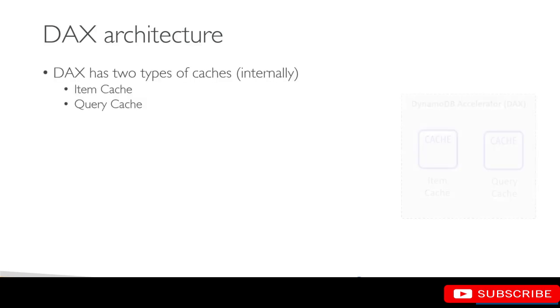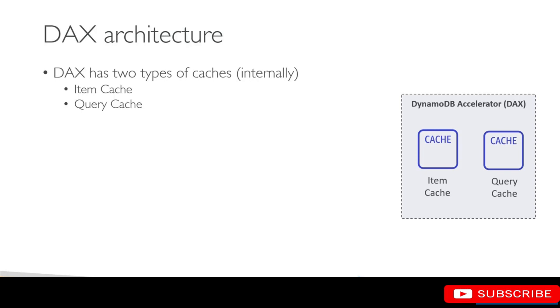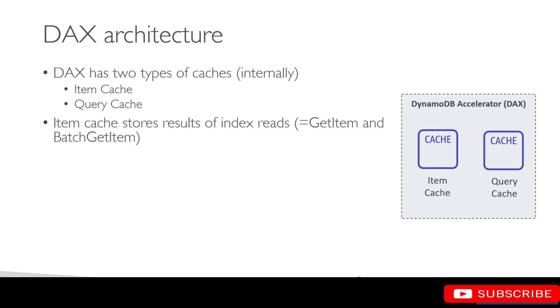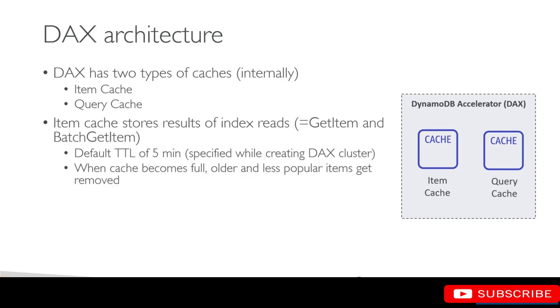Now let's look at the DAX architecture. DAX internally has two types of caches: item cache and query cache. These are two independent caches present in the DAX cluster. Item cache stores your index reads — whenever you make a get item or batch get item request, a read request using any of the index, the result of that query gets stored in the item cache. The default TTL is about five minutes, specified when you create your DAX cluster. When the cache becomes full, the older and less popular items will get removed.